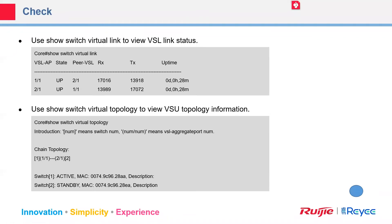In summary for the redundancy solutions, we discussed STP, RSTP, MSTP, and also VSU. When using VSU, the network appears as one logical device in management, so within the VSU there is no loop and all links can be used. Between the VSU and other switches, we can use link aggregation so all links are active — this is the main advantage of VSU.